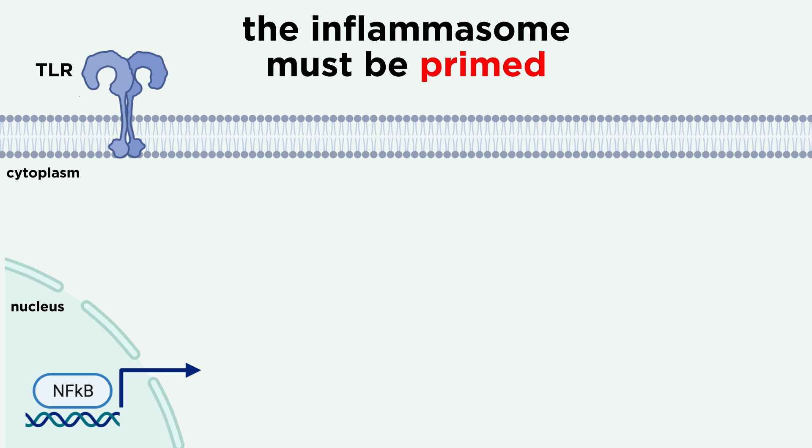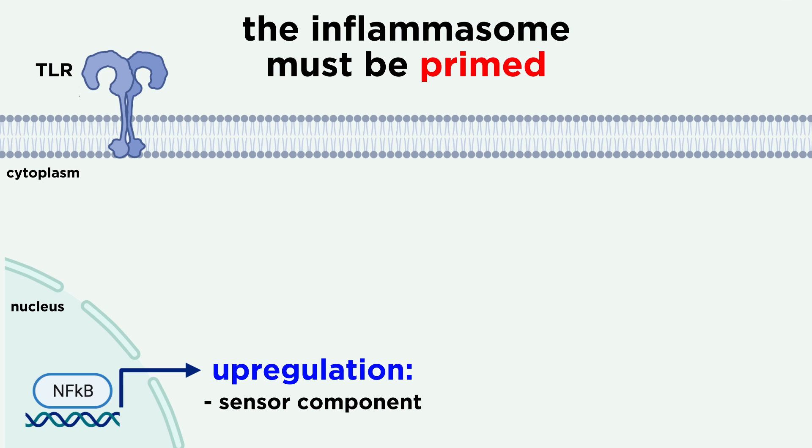Before the inflammasome can assemble, it first needs to be primed. The priming step transcriptionally upregulates the sensor component, as well as IL-1 beta, which is one of the downstream cytokine effectors of the inflammasome. This is the first signal in a two-signal system, which as we've discussed is quite common in the immune system.